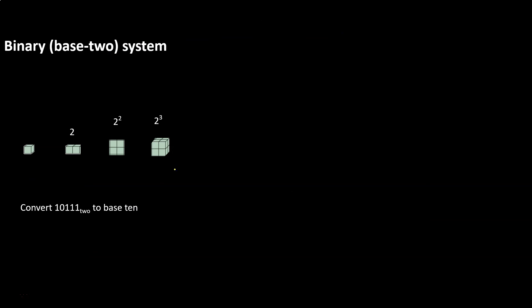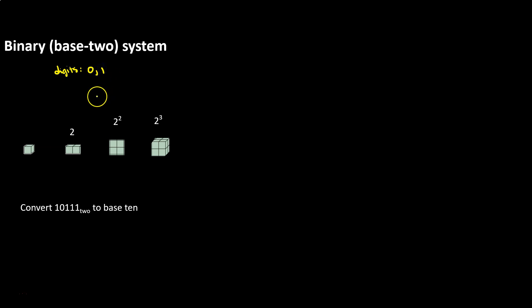Now let's look at the binary system — something that computers are heavily reliant on for programming. It's a base 2 system, and if you blink you'll miss how the regrouping works. Just like base 10 or base 5 blocks, we have a unit. If I have 2 units, I turn it into a long. If I have 2 longs, I turn it into a flat. And if I have 2 flats, I turn that into a block. These groupings happen very quickly, because we're only using 2 digits — 0 and 1. Keep in mind the digit 2 is not usable in base 2, because as soon as we have 2 of something, we regroup it to the next place value.